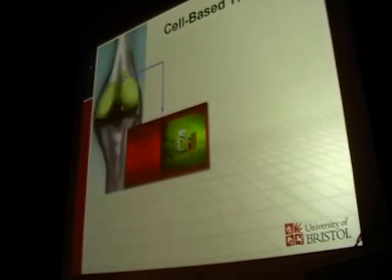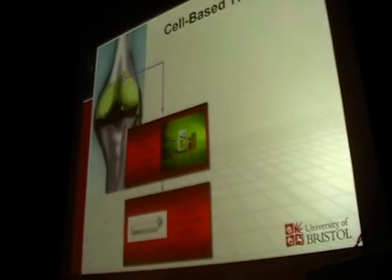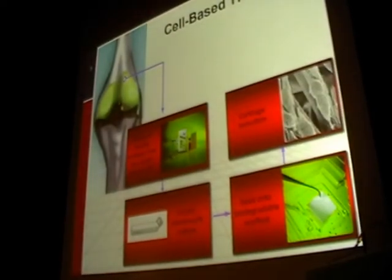There are a number of cell-based tissue engineering therapies currently used in the clinic, and these follow a basic tissue engineering approach. They involve taking a small biopsy of cartilage from a low weight-bearing site in the knee joint. The chondrocytes — the cartilage cells — are isolated from that biopsy and expanded in number by growing them in monolayer culture. Once we have enough cells, they can be seeded onto a biodegradable scaffold and grown for a further time in the lab so that the cells begin to lay down a new cartilage matrix.